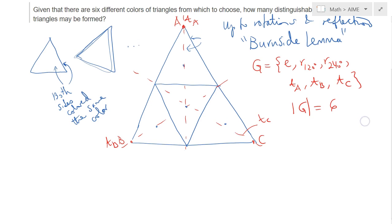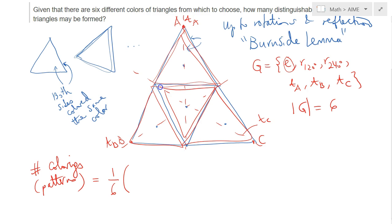Now it's time to apply Burnside Lemma. Accordingly, the number of colorings or coloring patterns, distinguishable patterns, is equal to 1 over G, 1 over 6, open parentheses. We need to find the fix of each of these group symmetries. How many colorings will be fixed under the identity? Identity will fix pretty much everything. We have four triangles, so we can color this one in six different ways, this one in six different ways, this one in six different ways, and the middle one in six different ways for a total of 6 to the 4, plus...